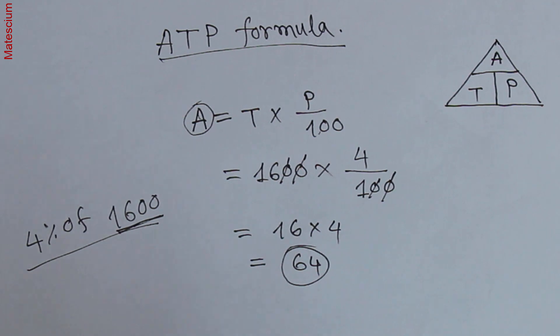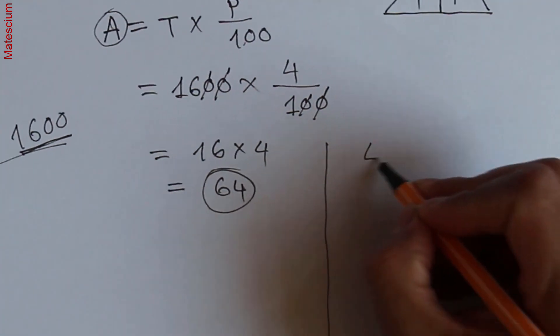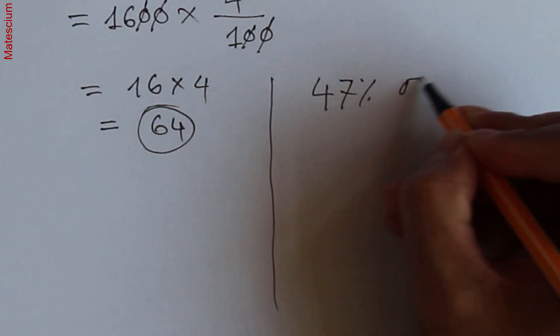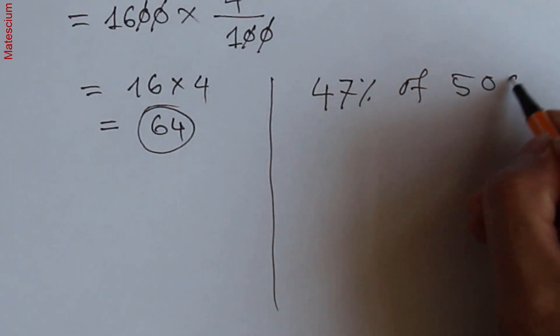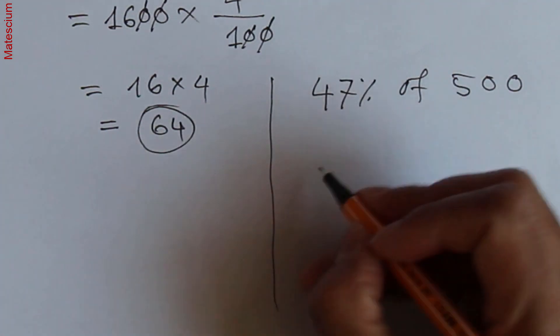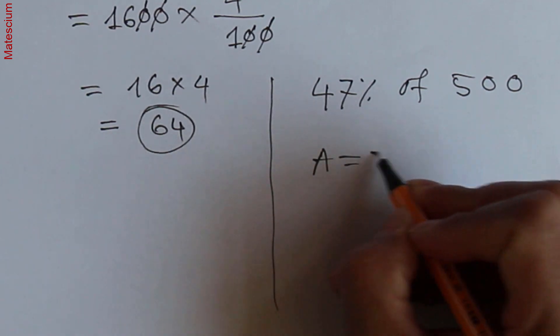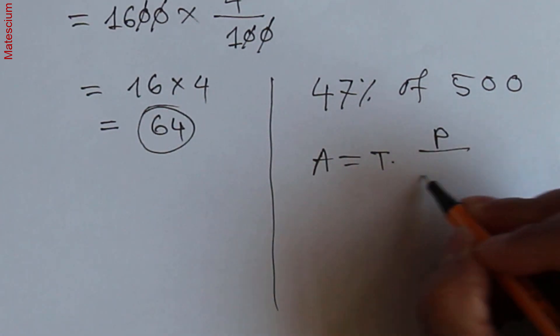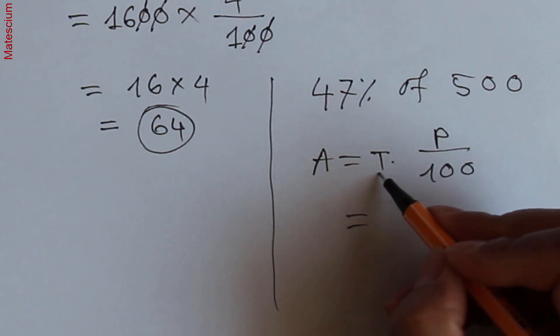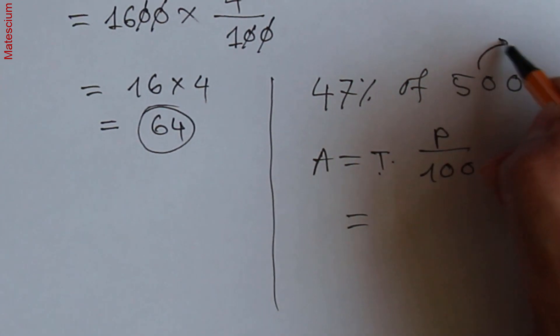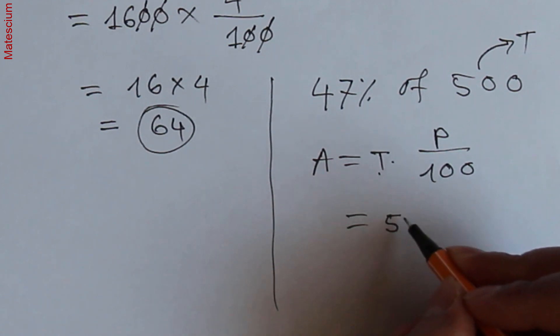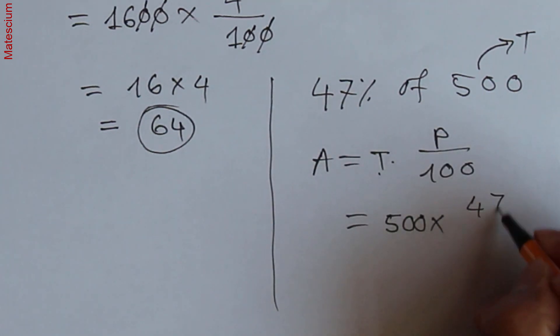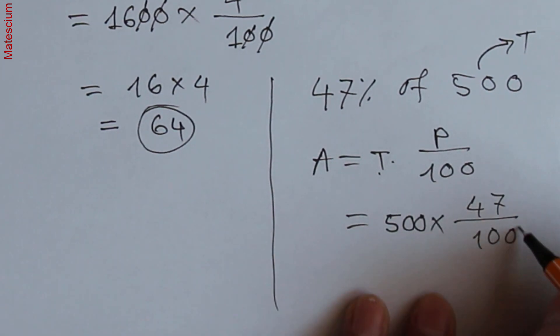Let's calculate one more example. Let's say, what is the value of 47 percent of 500? We can apply the same ATP formula: A equals T times P over 100, right? This T means total value which is here 500. That means T I can replace by 500, P is 47 divided by 100.